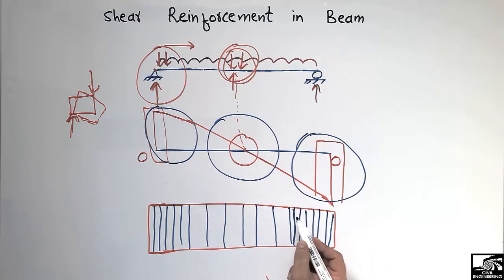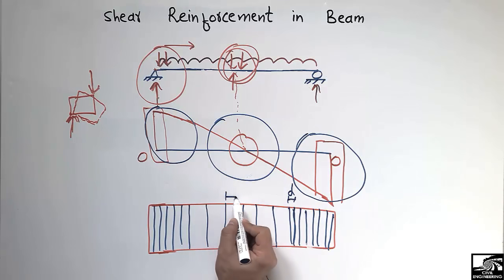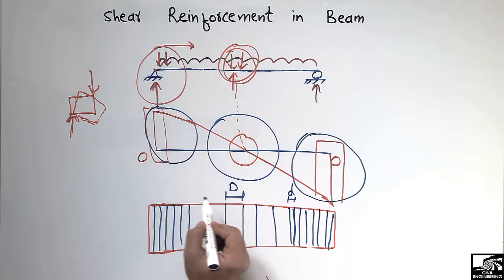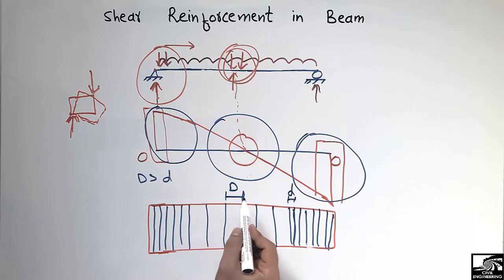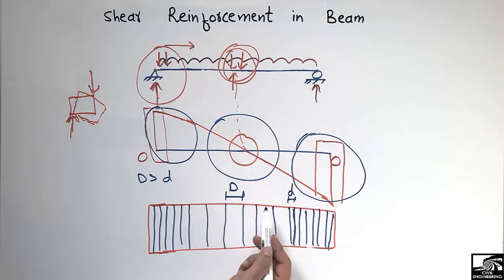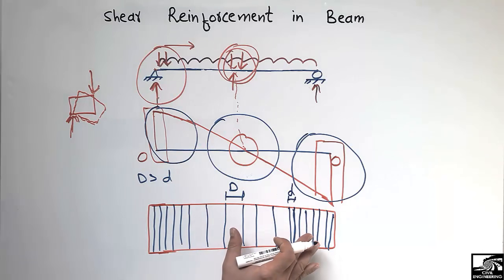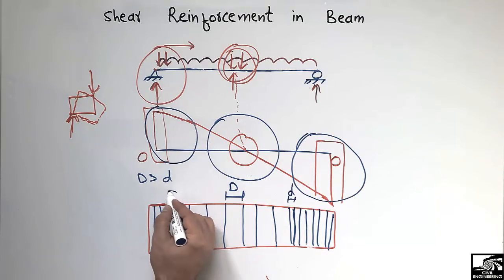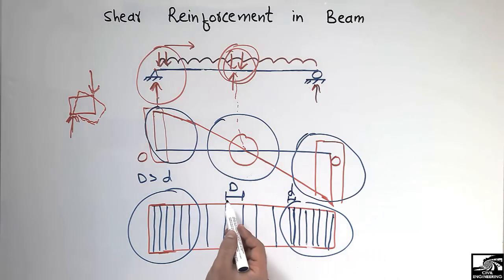The spacing at the ends, denoted as smaller d, is less than the spacing at the midpoint, the larger D, because there is no such high demand of shear forces at the midpoint. This is the economical design of the beam — smaller stirrup spacing at the ends and larger spacing at the midpoint where shear stresses are low.